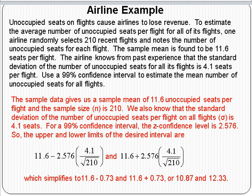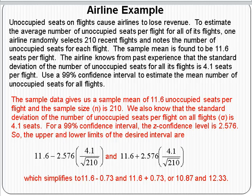Let's look at an example — a fairly basic one where the information is given. Unoccupied seats on flights cause airlines to lose revenue. To estimate the average number of unoccupied seats per flight on all of its flights — that's the parameter — one airline randomly selects 210 recent flights. The sample mean is 11.6 unoccupied seats per flight. The airline knows from past experience that the standard deviation of unoccupied seats for all its flights, sigma, is 4.1 seats. Use a 99% confidence interval to estimate the mean number of unoccupied seats on all flights.